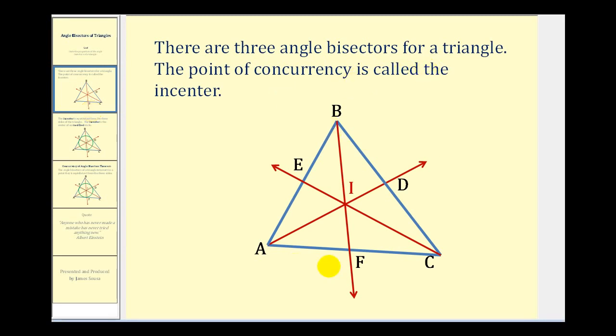Looking at the diagram here, ray CE bisects angle ACB, which creates two congruent angles. This angle here is congruent to this angle here.